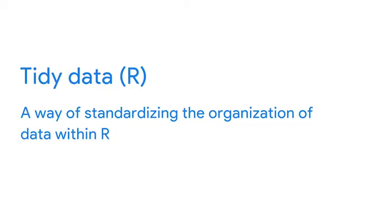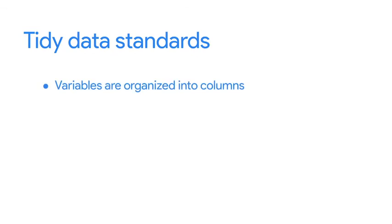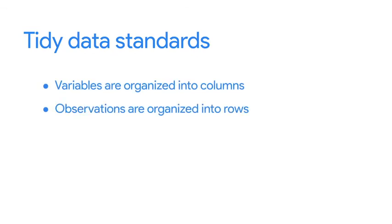Consistent data structures like data frames make it easier to operate on an entire data set. Tidy data refers to the principles that make data structures meaningful and easy to understand — it's a way of standardizing the organization of data within R. These standards are pretty straightforward: variables are organized into columns, observations are organized into rows, and each value must have its own cell.